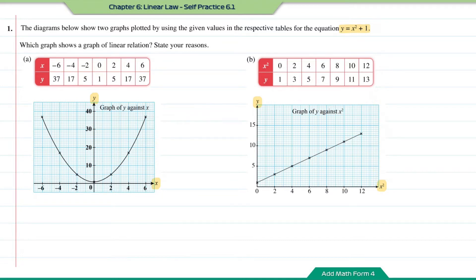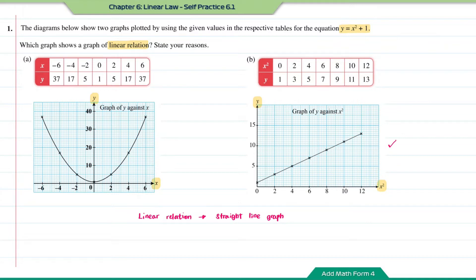The graph of linear relations is when you connect all the dots that you have plotted, it forms a straight line. So for question 1, the graph in B is a graph of linear relations, as when you plot it, a straight line is obtained.